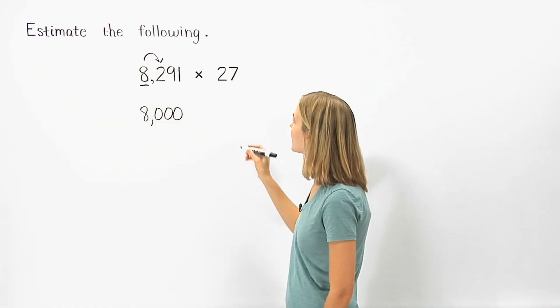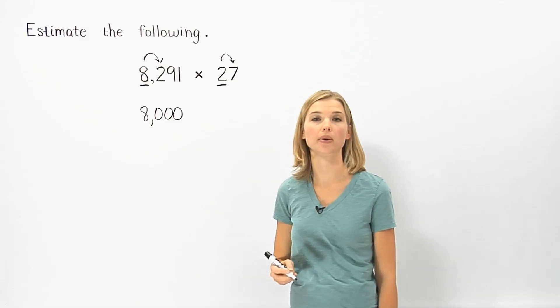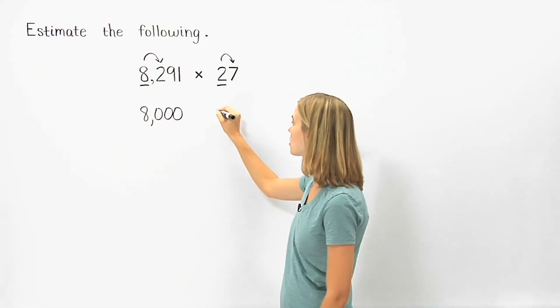To round 27 to the nearest ten, the seven to the right of the rounding place tells us to round up. So 27 rounds up to 30.